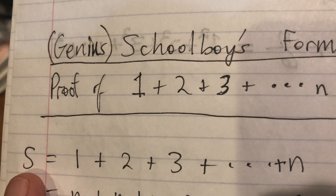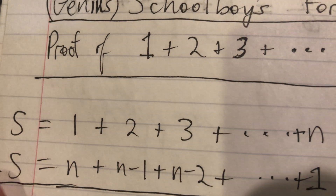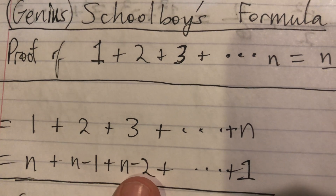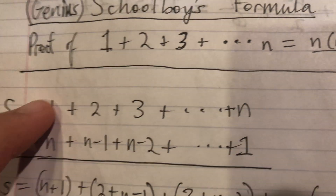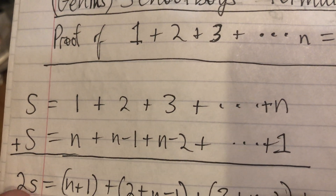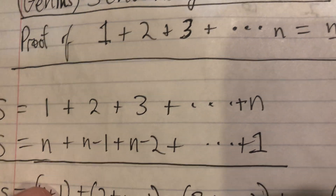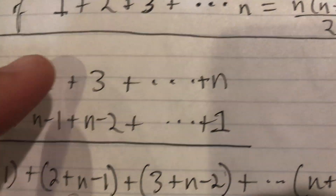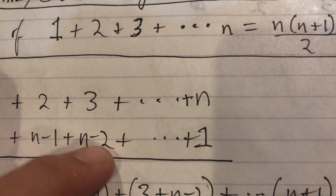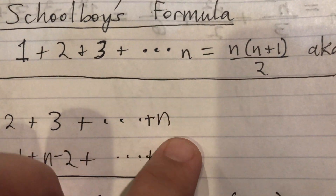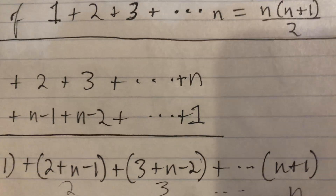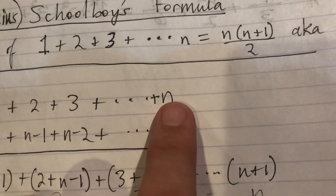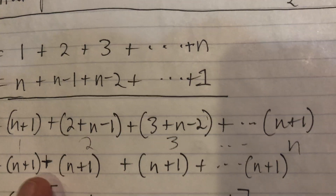We could call it anything — call it Bob, call it Leroy — but let's call it S. Write it again but backwards: n plus n minus one plus n minus two all the way down to one. Now add each column: in the first column we have n plus one; what's two plus negative one? That's one, so we have n plus one. Three plus three minus two is one, so n plus one. At the end we also have n plus one.